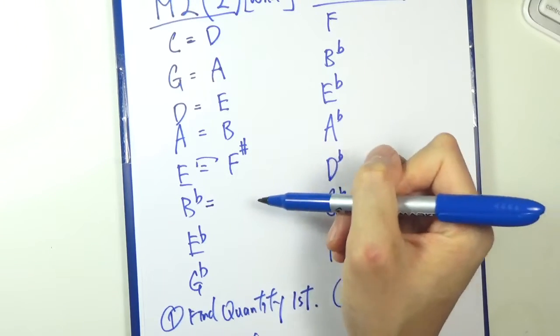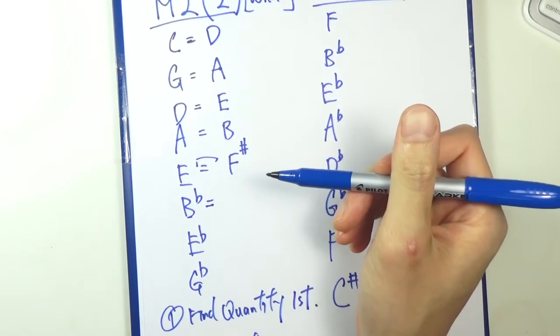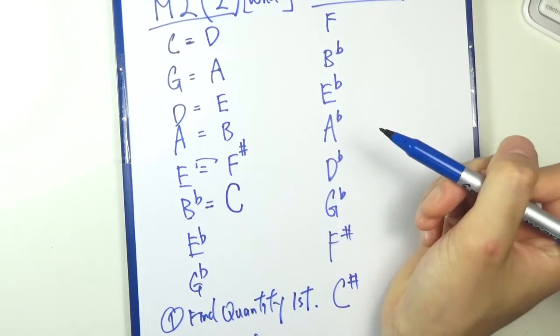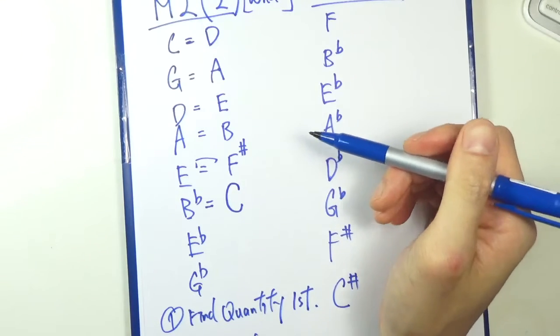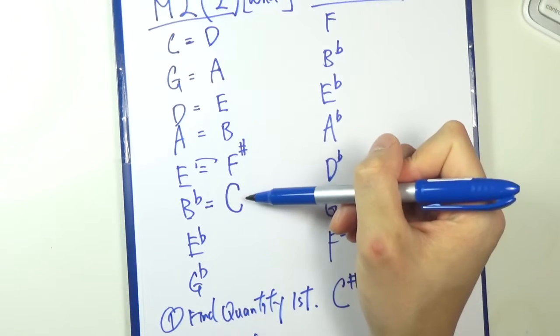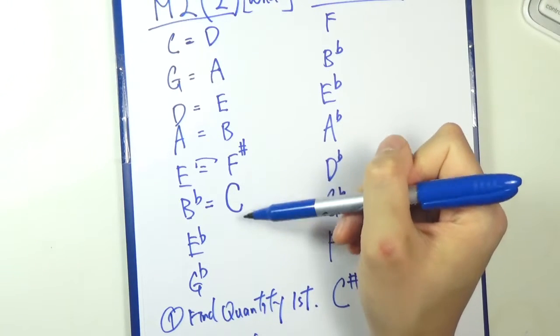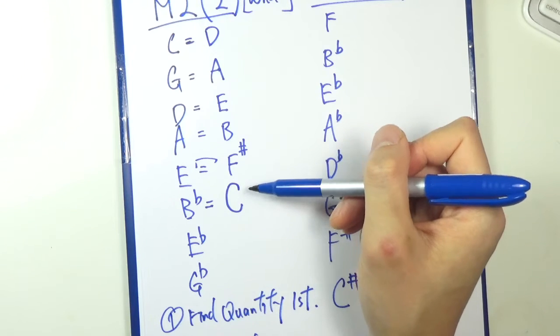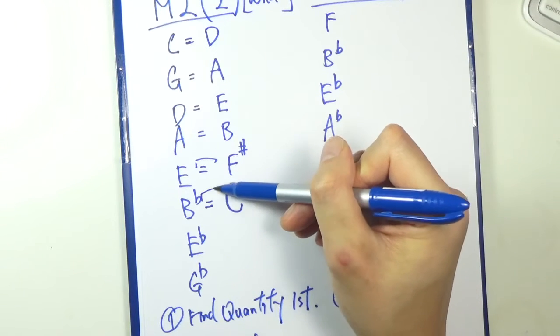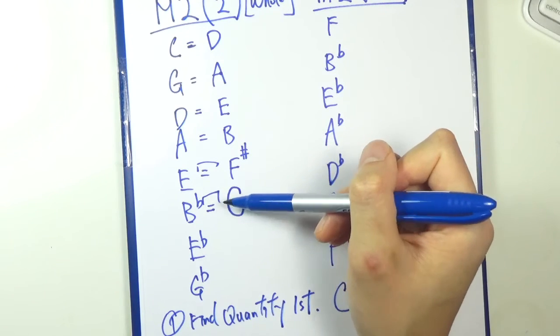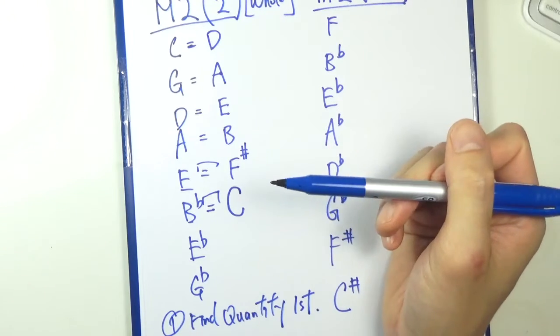B flat. So again, look for quantity first. So you don't have to worry about quality first. So it has to be a C note, B and C. And that's half of the answer already. So B flat and C, check the interval here. Originally B and C is only half step. B flat makes that bigger, and that's already a whole step. So we're good here actually.